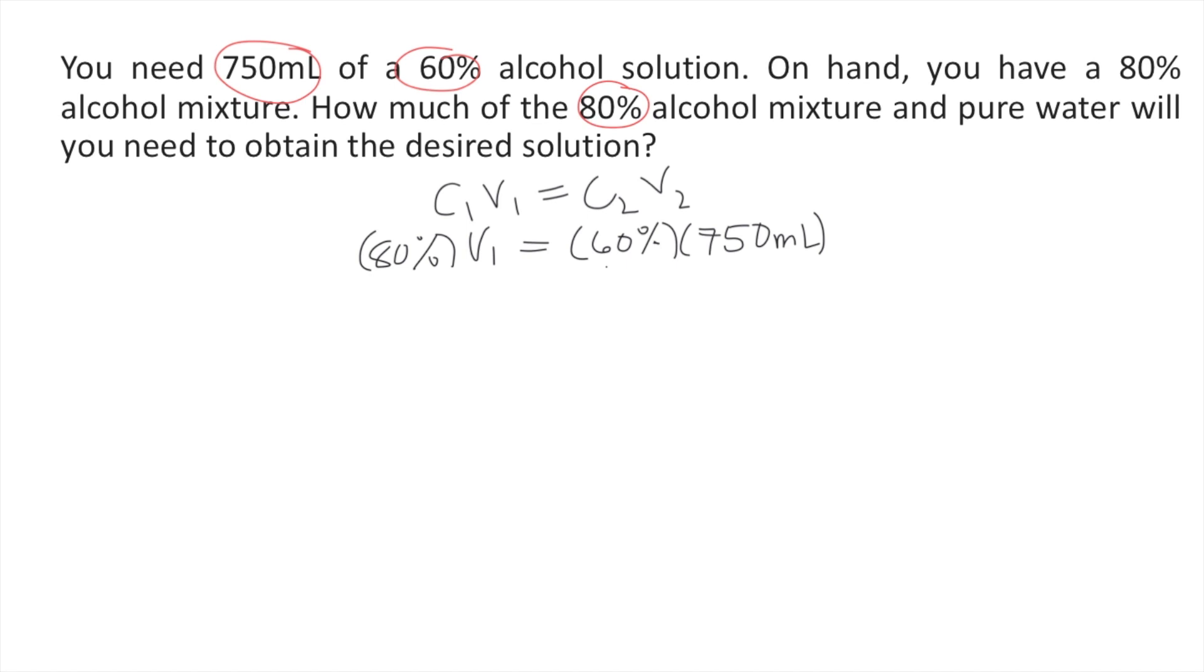So to solve for V1, what you're gonna do is you divide both sides of the equation by 80%. So 80% cancels on the left side. So what's left on the left side is V1.